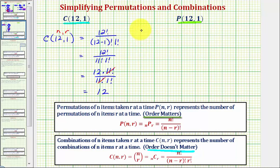Now let's consider our permutation. So we have 12 permute 1, which is equal to n factorial, or 12 factorial, divided by n minus r factorial, which would be 12 minus 1 factorial, or 12 factorial divided by 11 factorial.